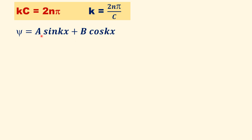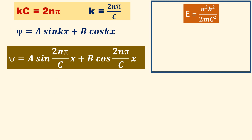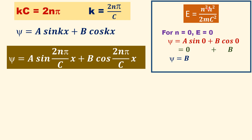Substituting k equal to 2n·pi by c into the wave function gives psi equal to A sin(2n·pi·x / c) plus B cos(2n·pi·x / c). For comparison, for a particle in a one-dimensional box, E equal to n-squared h-squared by 8m·a-squared, where a is the length of the box. For n equal to 0, E equal to 0, and substituting gives psi equal to A sin 0 plus B cos 0 equal to B.